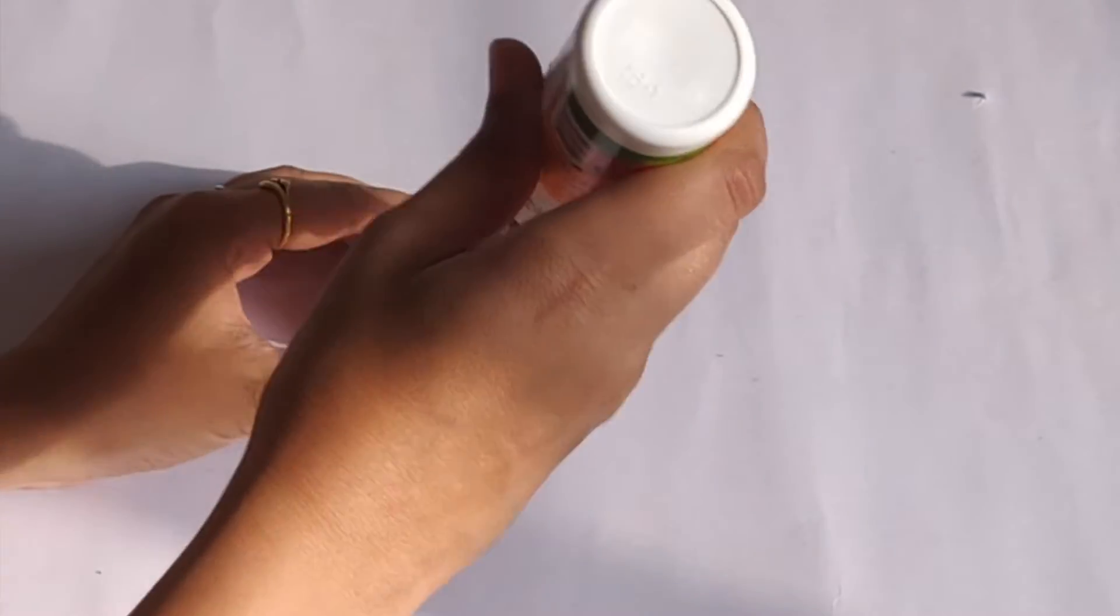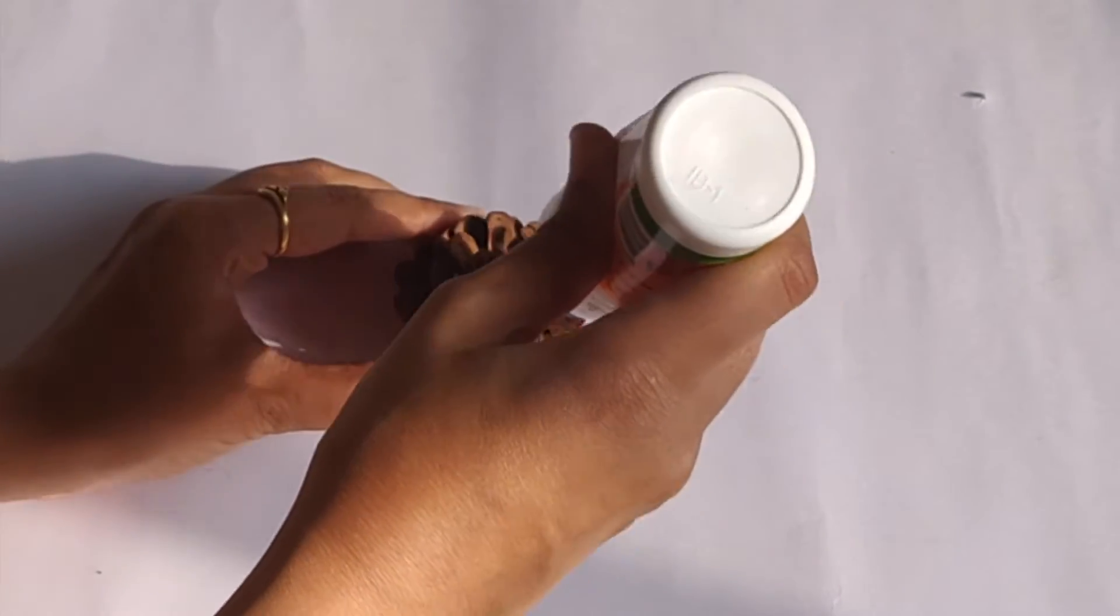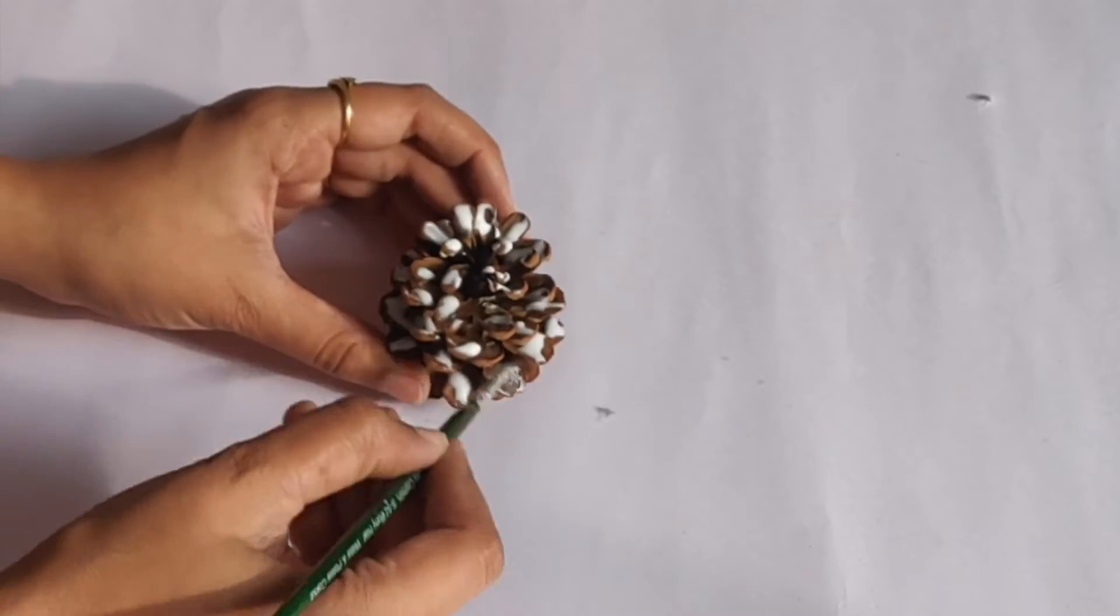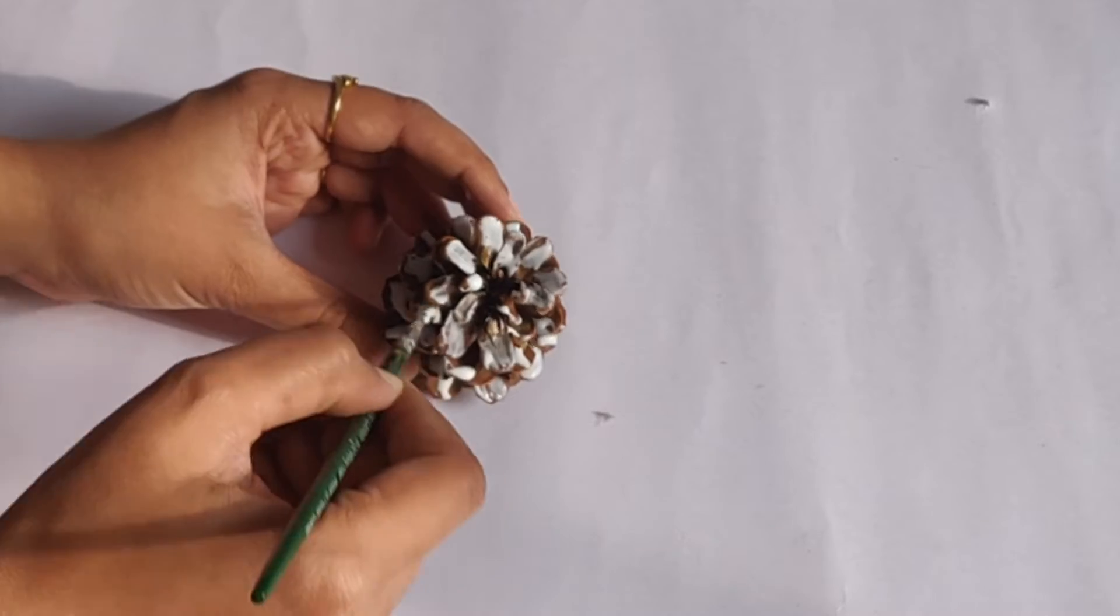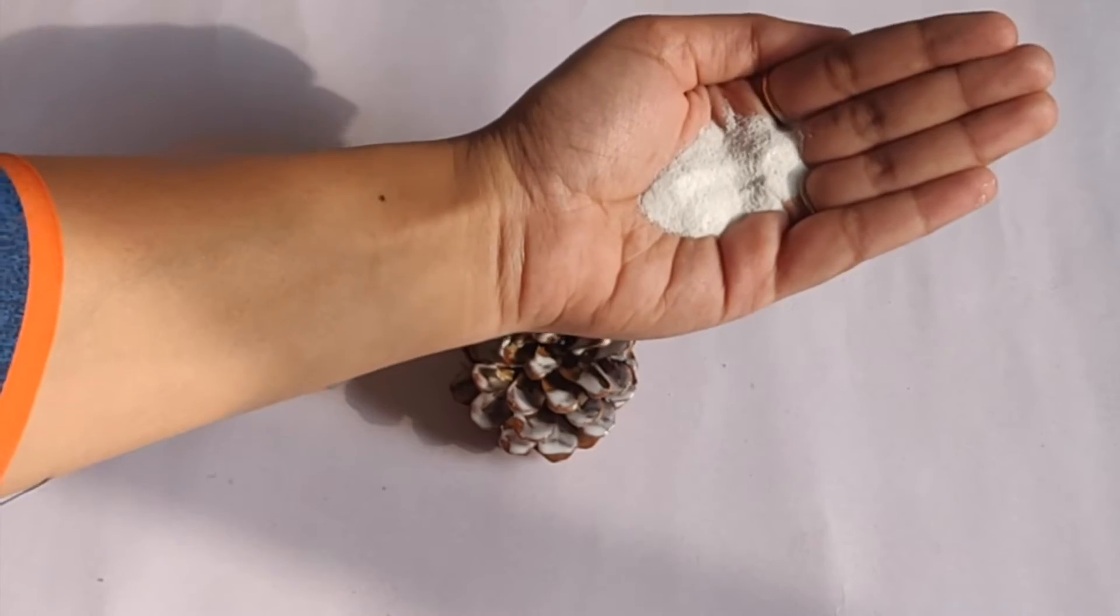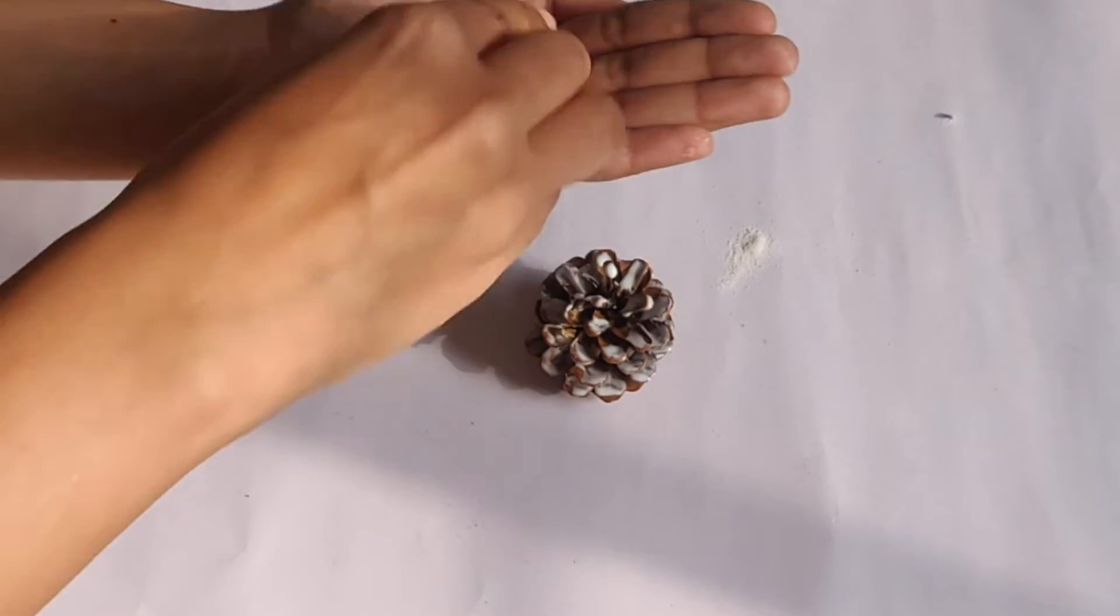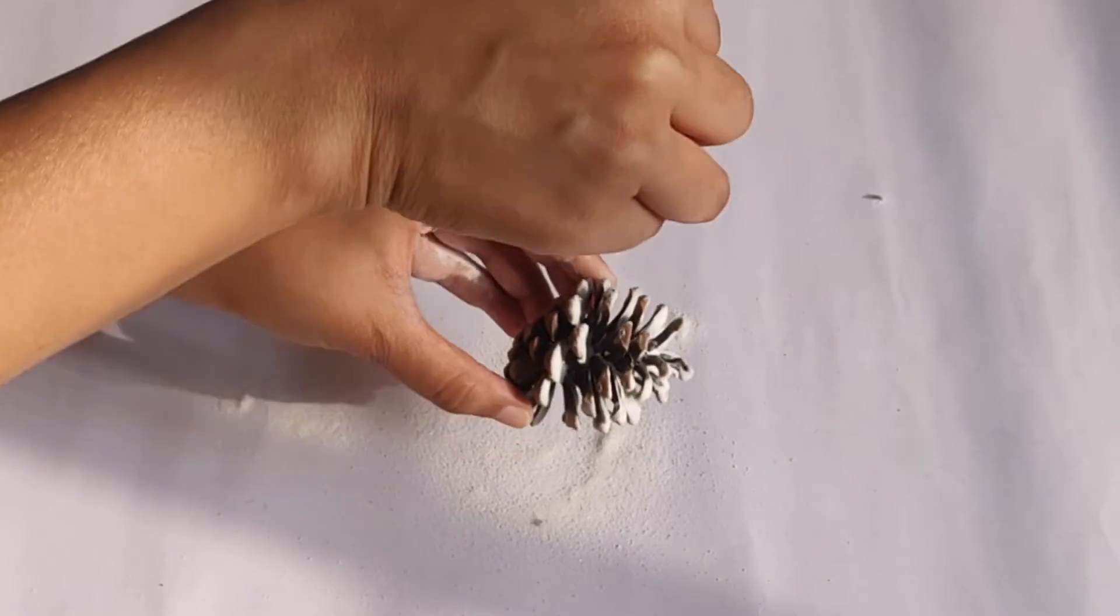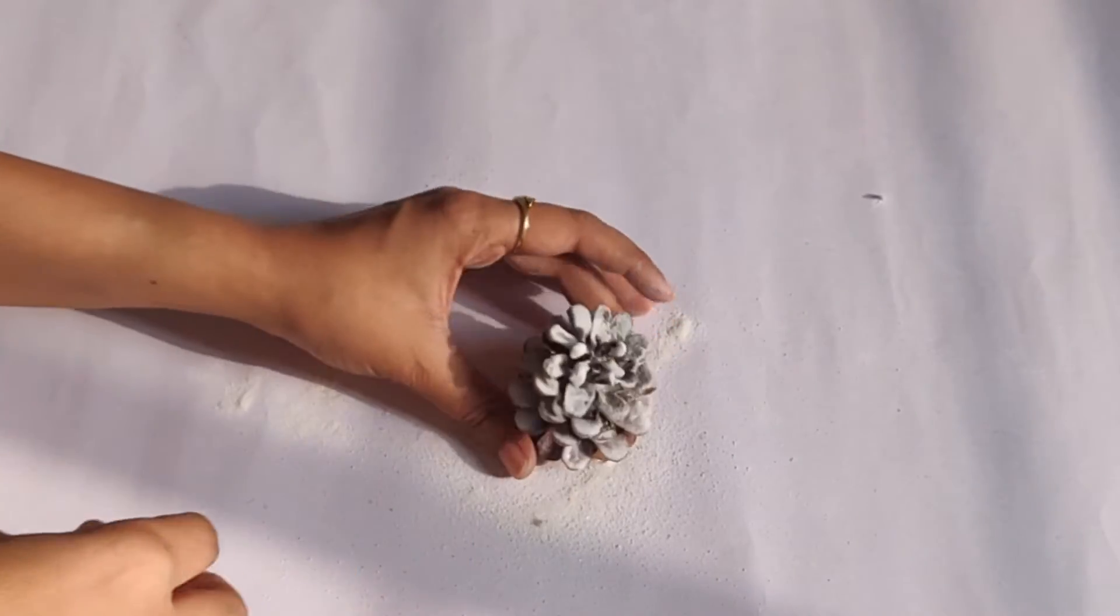For the next DIY, I am using pinecone and spreading Fevicol all over it. Then I am going to sprinkle this white rangoli all over the pinecone. If you don't have white rangoli, you can absolutely use salt.